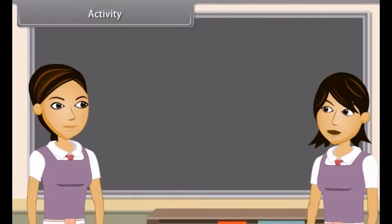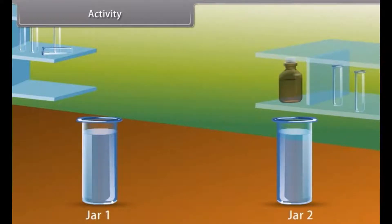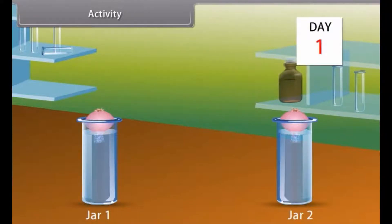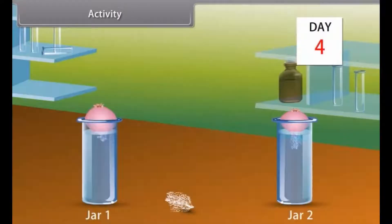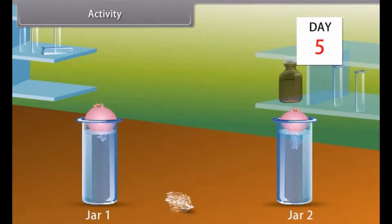We can prove that meristematic tissues are found only in certain regions by doing an activity. Take a glass jar filled with water and place a same-sized onion bulb on it for three days to observe the growth of roots. Measure the length of roots on day 1, 2 and 3. Then on the fourth day, cut the roots of the onion bulb and place it back on the jar. On the fifth day, we find that the growth of roots has stopped. This activity proves that growth of plants occurs only in certain specific regions because the dividing tissue, also known as meristematic tissue, is located only at these points.